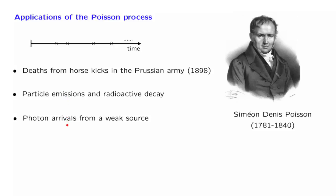Conversely, if you have a photodetector looking at a very weak light source, photons arrive from that weak light source one at a time, and the times at which photons hit the photodetector are very well modeled by a Poisson process.